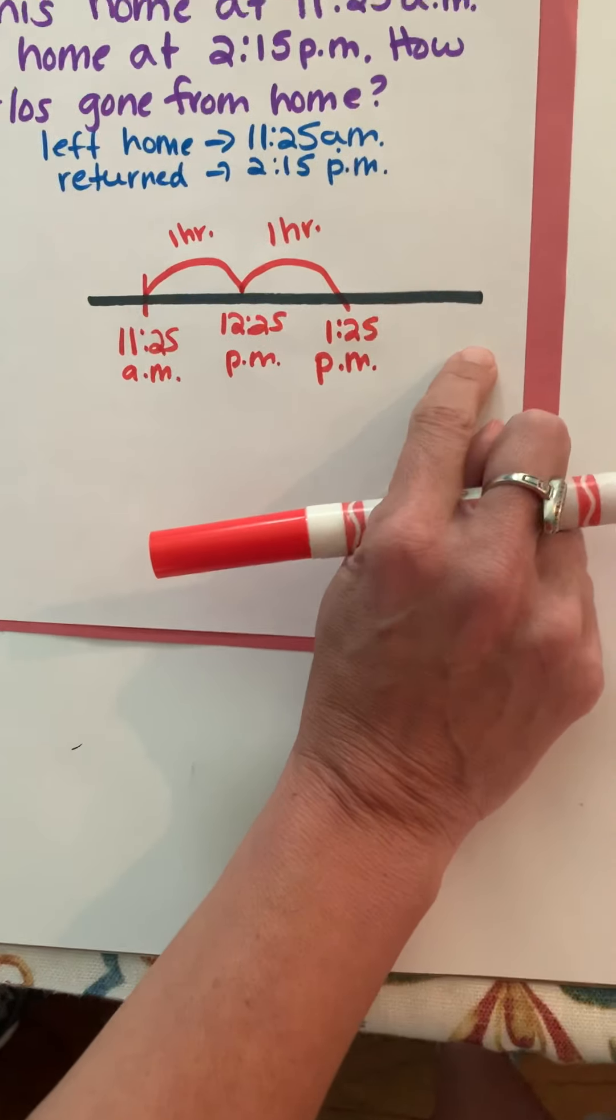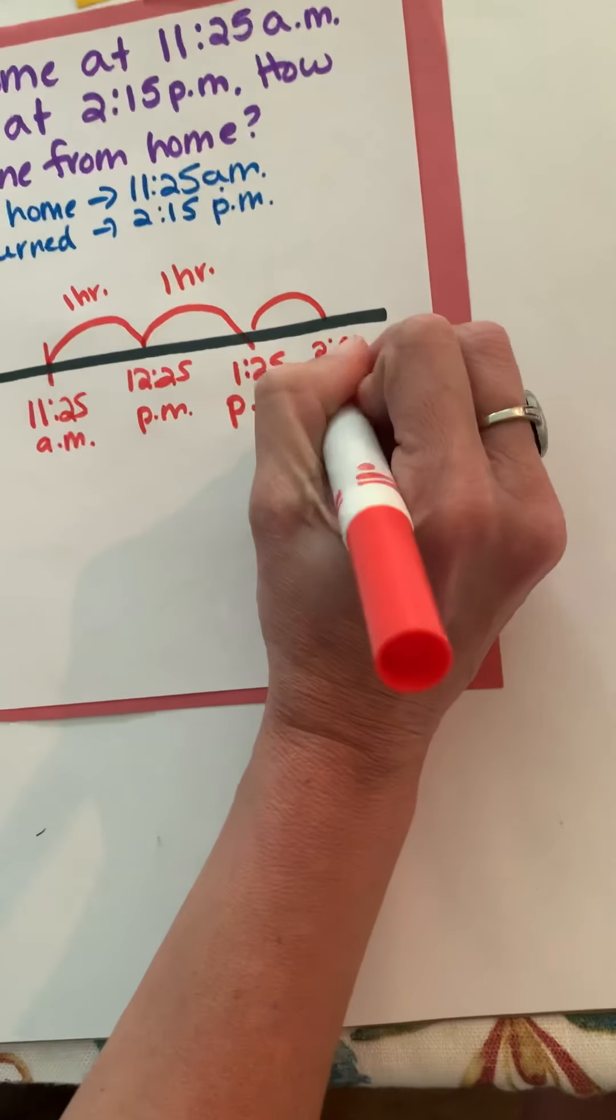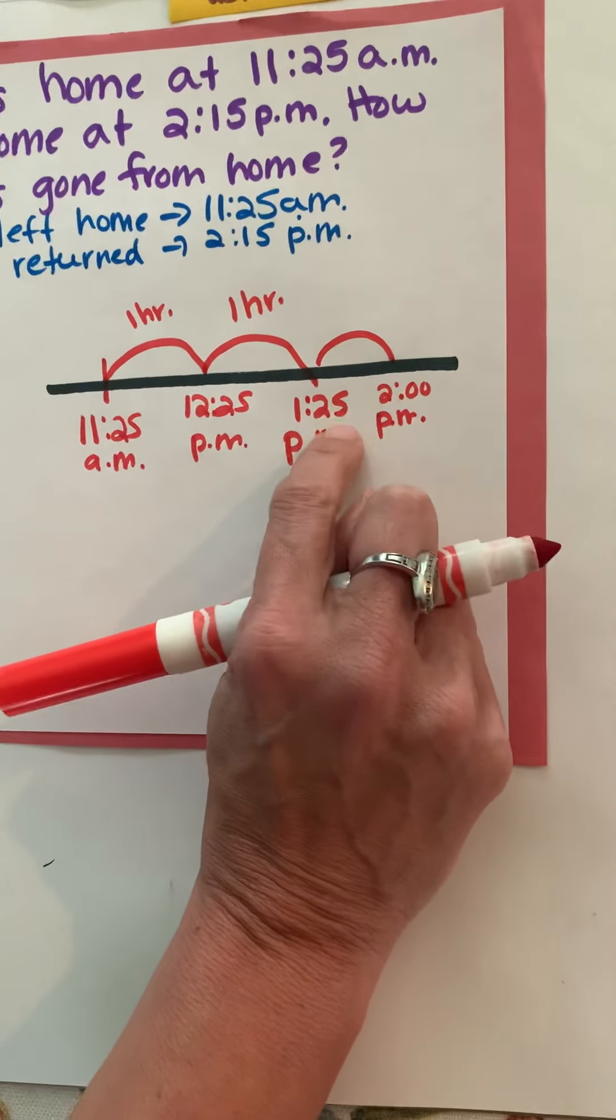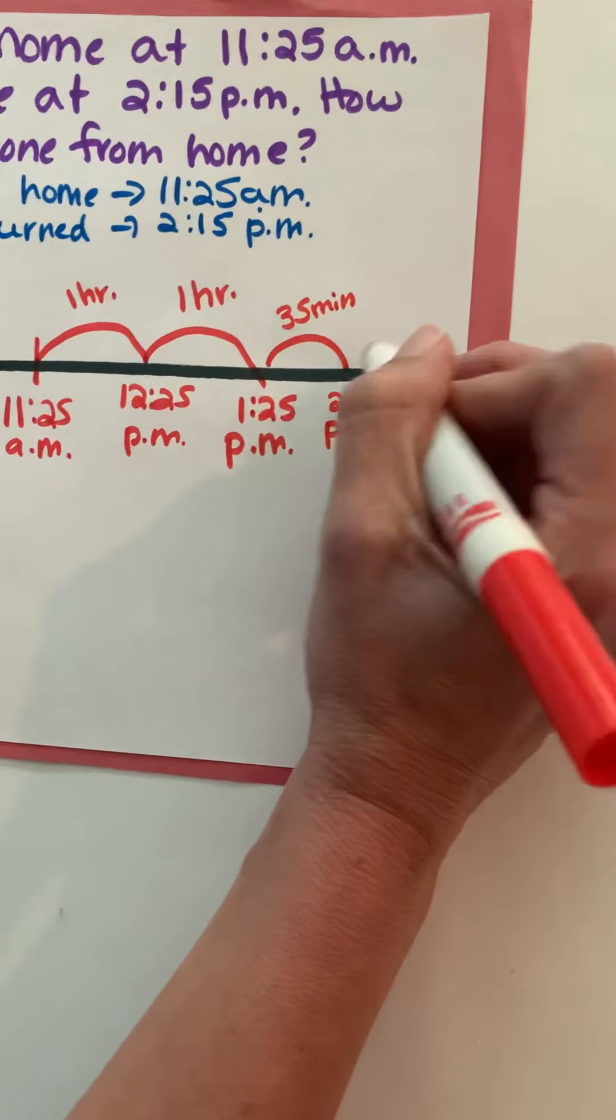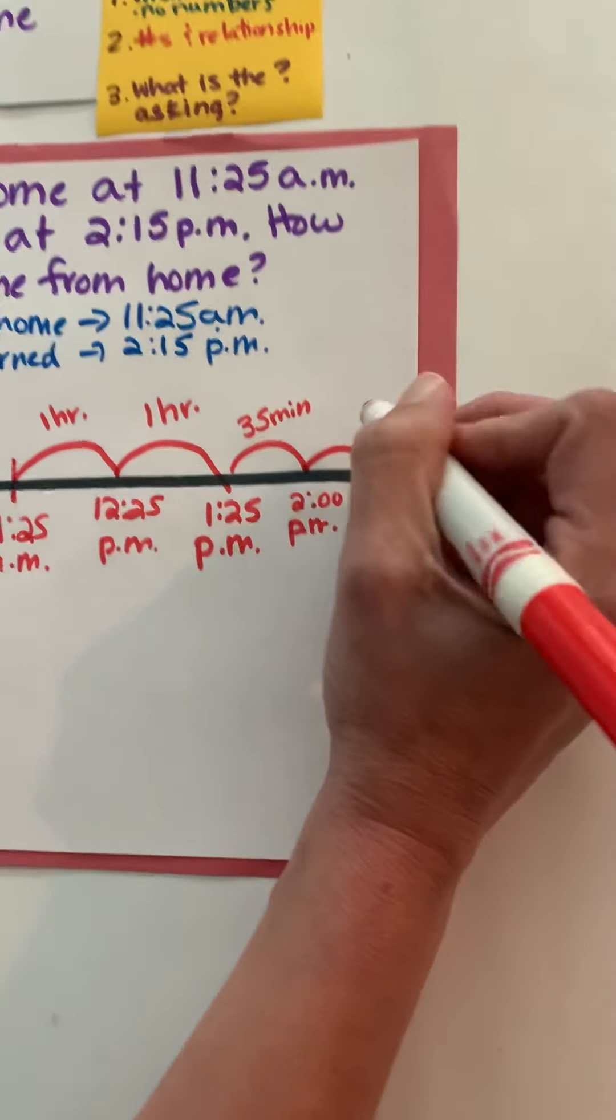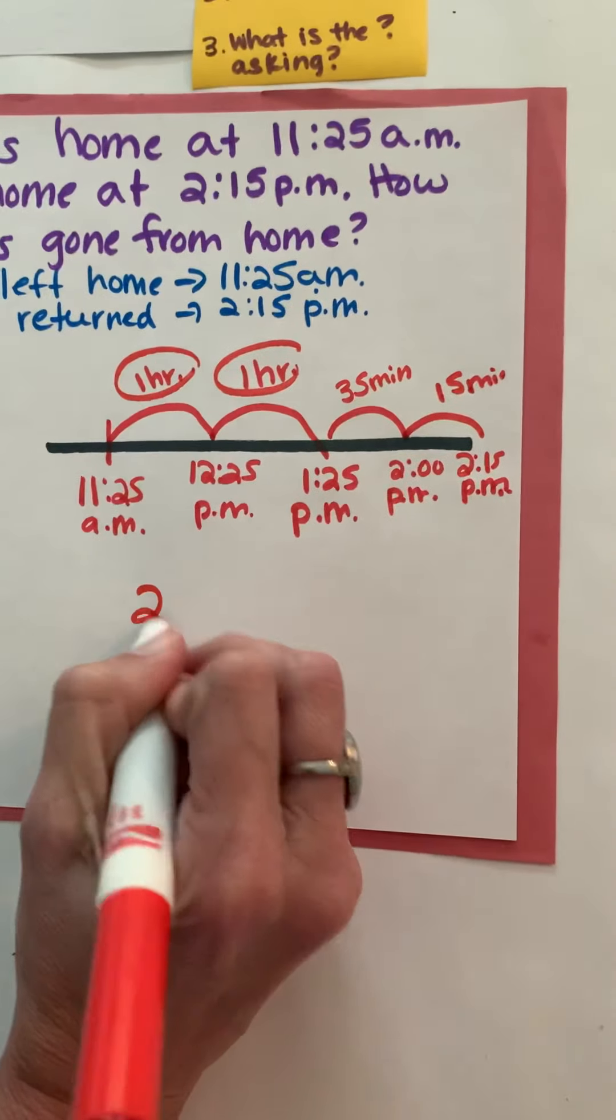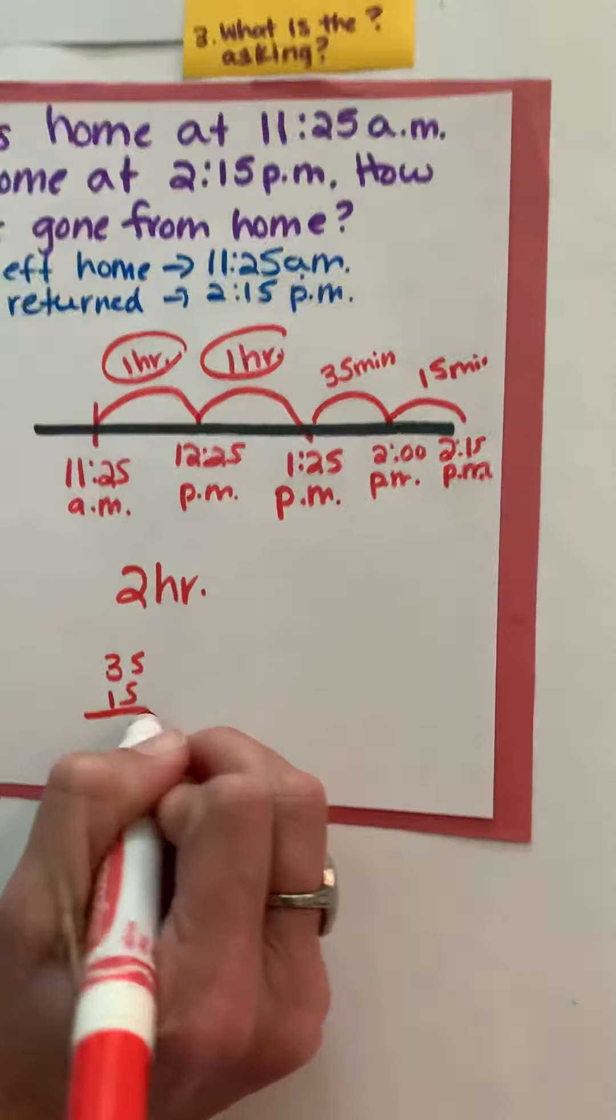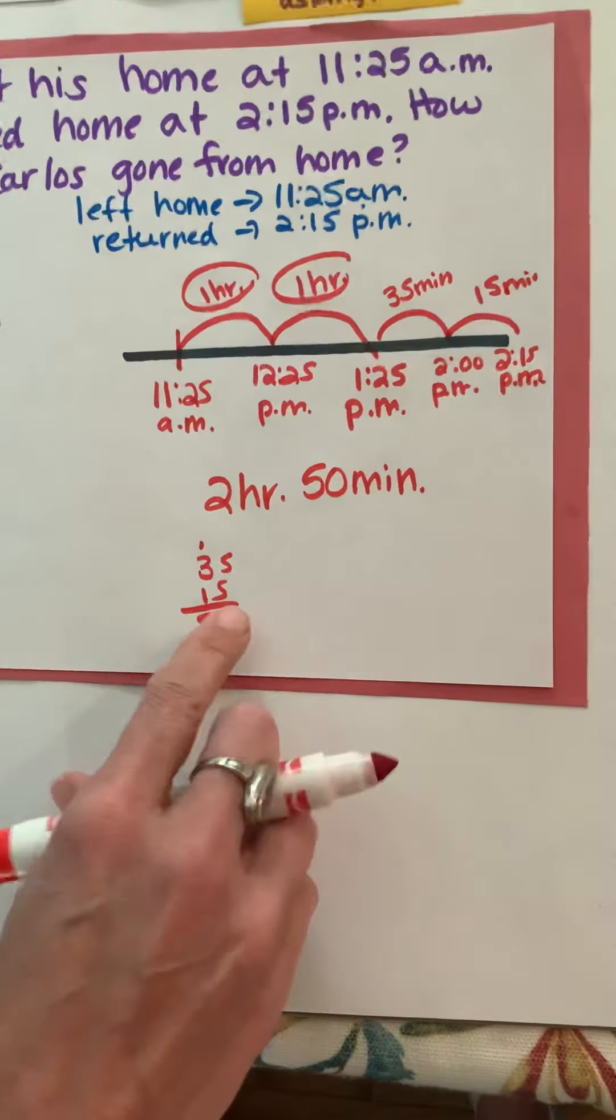Now can I go to 2:25? I cannot so what I'm going to do is I'm going to go ahead and jump to two o'clock. And I know that if I go from 1:25 to 1:30 that's five minutes and then from 1:30 to 2 that's 30 minutes so that's going to be 35 minutes. And then I'm going to go from 2 to 2:15, which is 15 minutes. So I can see here that I have two hours and then I can add 35 and 15 and I can see that that gives me 50 minutes. So the answer to my problem should be two hours and 50 minutes.